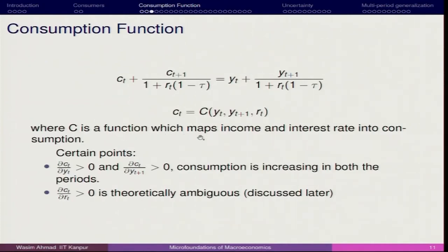Once we have c as a function, we measure income and interest in income. Here, δct — the rate of change in current consumption due to change in yt — and the rate of change in current consumption due to change in future income: if you expect future income is going to increase, you try to adjust current consumption based on that.